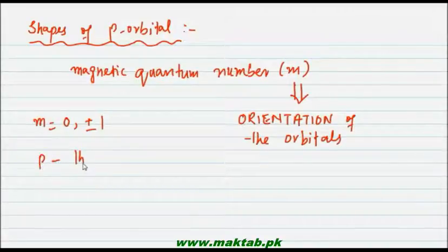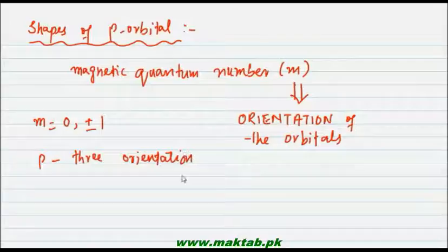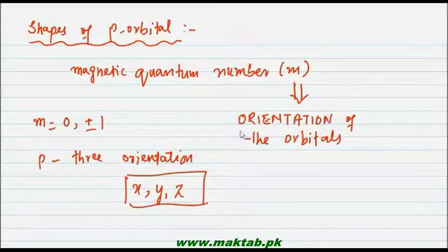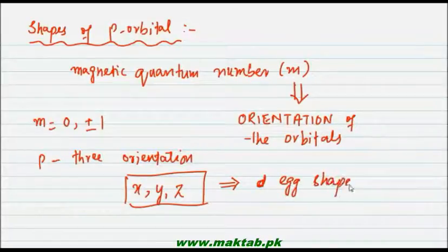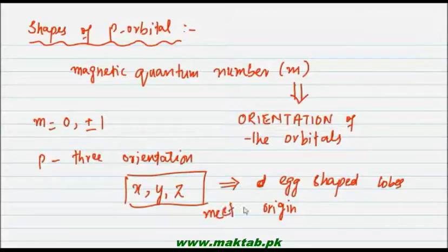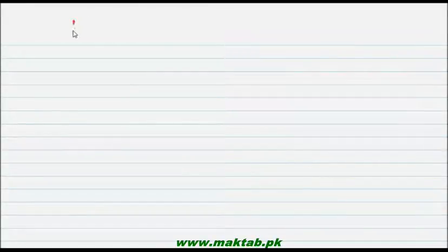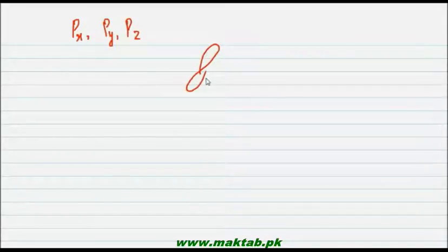P sub-shell has 3 orientations. This means that its shape exists along the x, y, and z axes. The shape of P orbitals consists of egg-shaped lobes which meet at the origin. These three orientations of P are called Px, Py, and Pz. If the shape is along the x-axis, it is called Px.